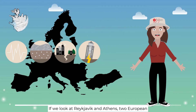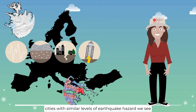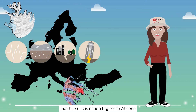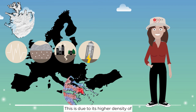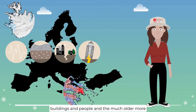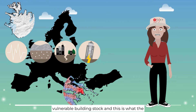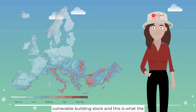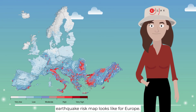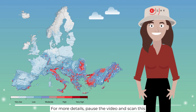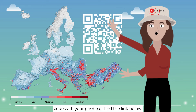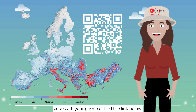If we look at Reykjavik and Athens, two European cities with similar levels of earthquake hazard, we see that the risk is much higher in Athens. This is due to its higher density of buildings and people, and the much older, more vulnerable building stock. And this is what the earthquake risk map looks like for Europe. For more details, pause the video and scan this code with your phone or find the link below.